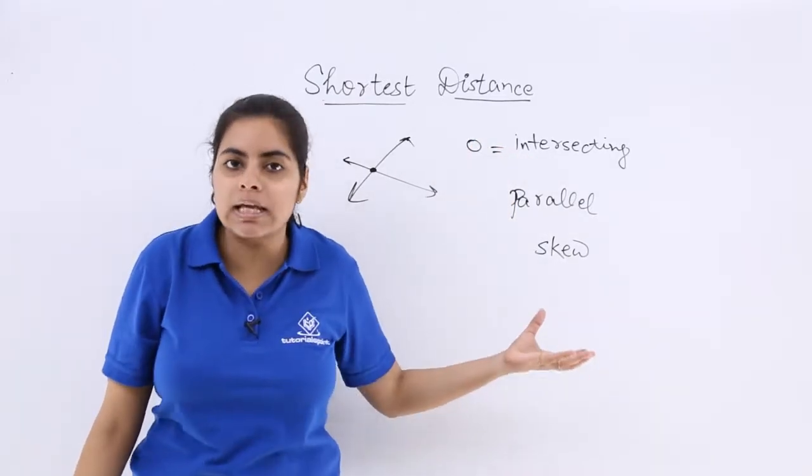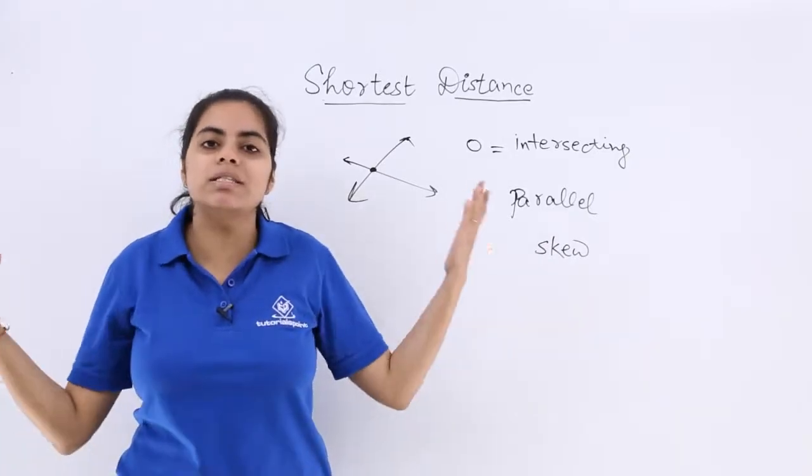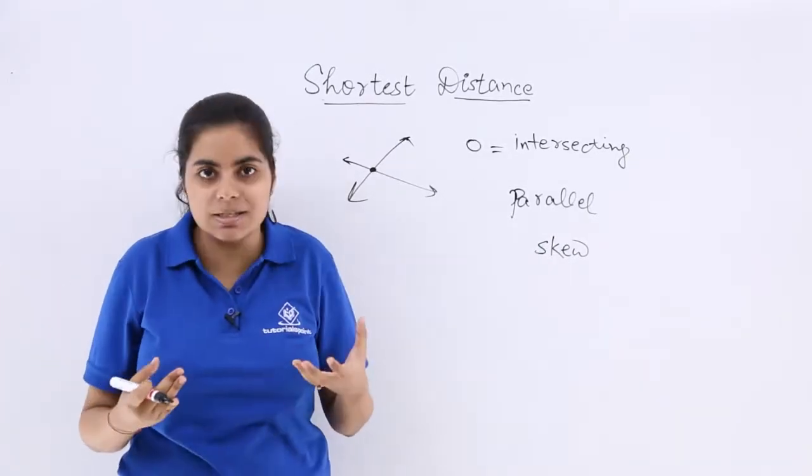And talking about parallel lines, parallel lines have an equal distance throughout. So how can you say that this is the shortest distance?